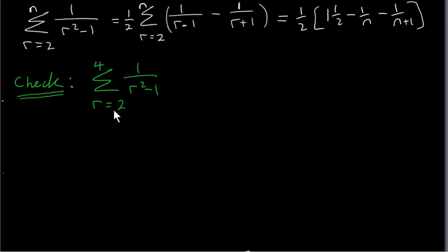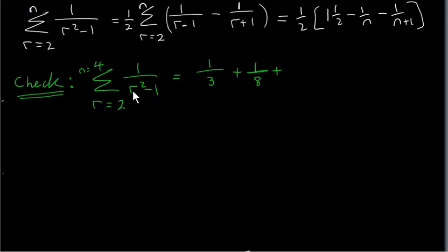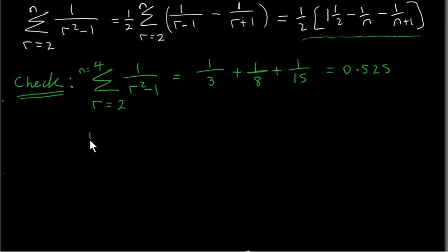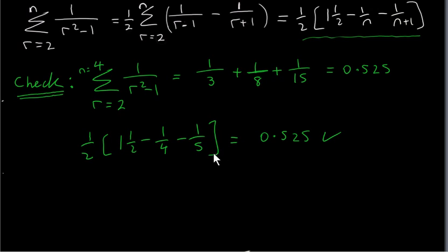As a check, let's calculate the sum from r equals 2 to 4, so n equals 4. We plug in r equals 2: 1 over (2 squared minus 1) equals 1/3. Then r equals 3: 1 over (3 squared minus 1) gives 1/8. Then r equals 4: 1 over (4 squared minus 1) equals 1 over 15. This gives 0.525. Now using our expression with n equals 4: a half times (1.5 minus 1/4 minus 1/5) also gives 0.525. This checks out.